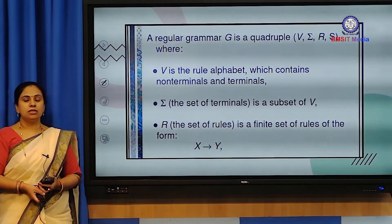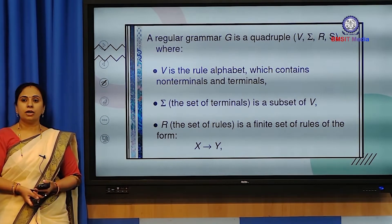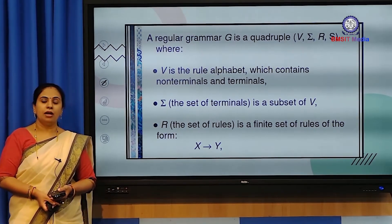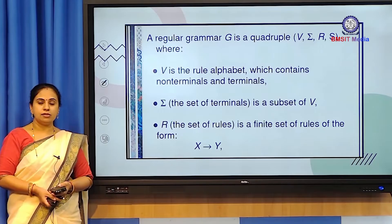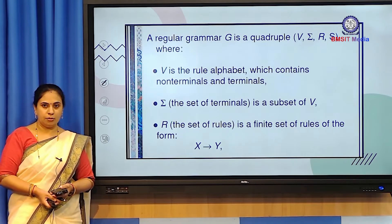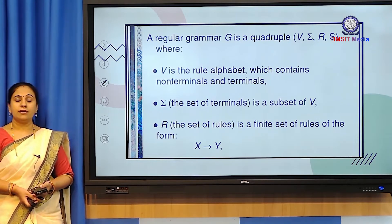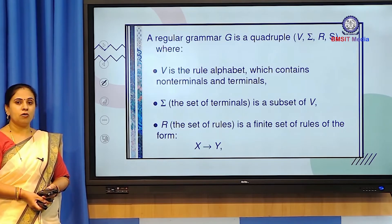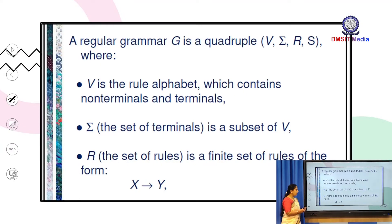Regular grammar G is defined mathematically and comprises four entities. The first is capital V, called the rule alphabet, which contains both non-terminals and terminals. Terminals are generally represented by lowercase letters and non-terminals by uppercase letters. The second entity is sigma, the input alphabet, which comprises symbols or terminals.